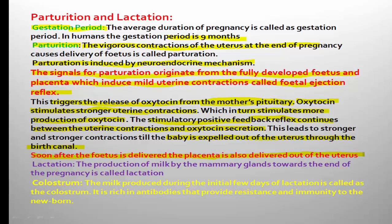After implantation, placental development starts simultaneously, and at parturition, along with the baby, the placenta is also delivered out of the uterus. That is why the placenta is called a temporary tissue. Now for the last two important definitions of the chapter: lactation and colostrum. Lactation is the production of milk by the mammary glands towards the end of the pregnancy.